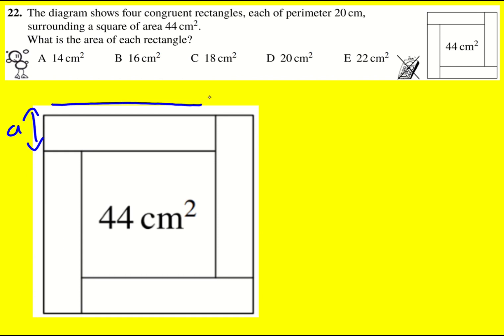I'm going to label the lengths of my small rectangles A and B, and then if I look at the... oh this is also going to be A. So the lengths of the side of the big square are A plus B.